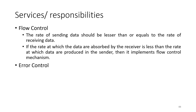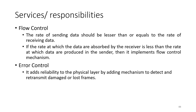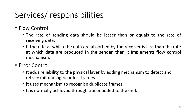The next service is error control. The data link layer adds reliability to the physical layer by adding mechanisms to detect and retransmit damaged or lost frames. It also uses a mechanism to recognize duplicate frames, and this is normally achieved through the trailer T2 added to the end of the frame.